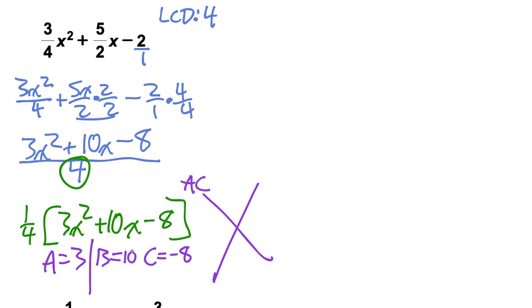Just in case you haven't watched any other videos and you're wondering where I'm getting these numbers from, a times c - that product of 3 times negative 8 is negative 24, and the sum is 10, that's the b value. I'm thinking it's probably some kind of 12, negative 2 combo.